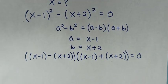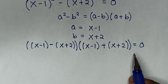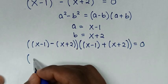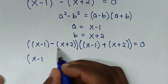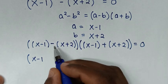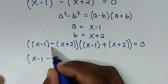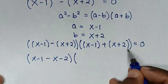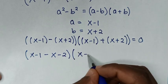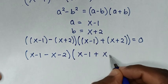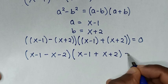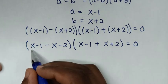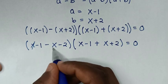Opening the brackets: the first factor gives (x minus 1) minus (x plus 2), and the second factor gives (x minus 1) plus (x plus 2). In the first bracket, x minus x cancels out.